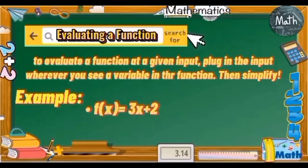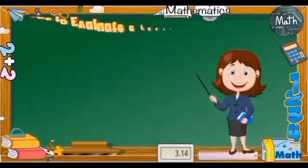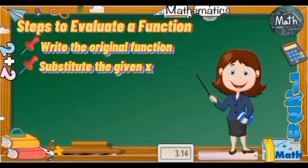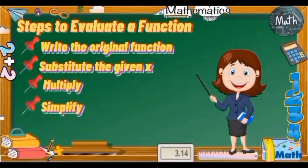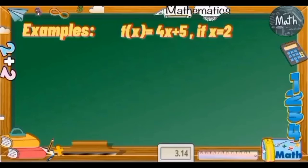We have here an example for evaluating a function. The given function is f(x) = 3x + 2. We substitute x to get y = 3x + 2. Technically, our input here is f(x) while our output is 3x + 2. These are the steps on how to evaluate a function: first, write the original function; next, substitute the given value for x; then multiply; and lastly, simplify the result if simplifying is possible.